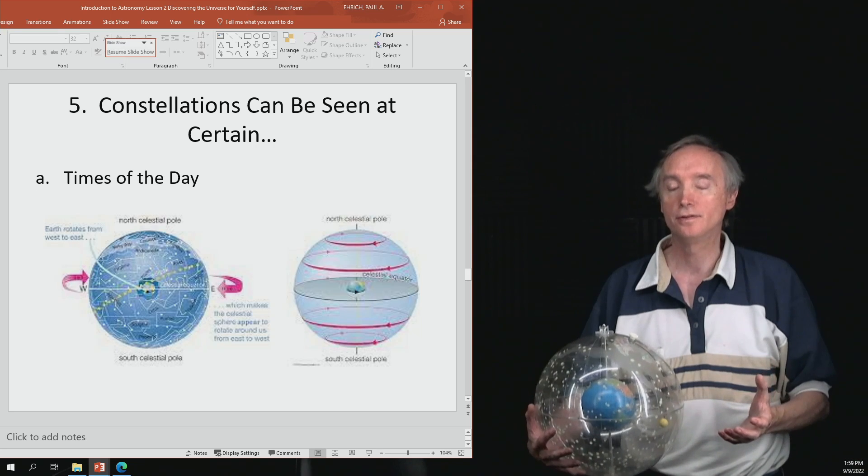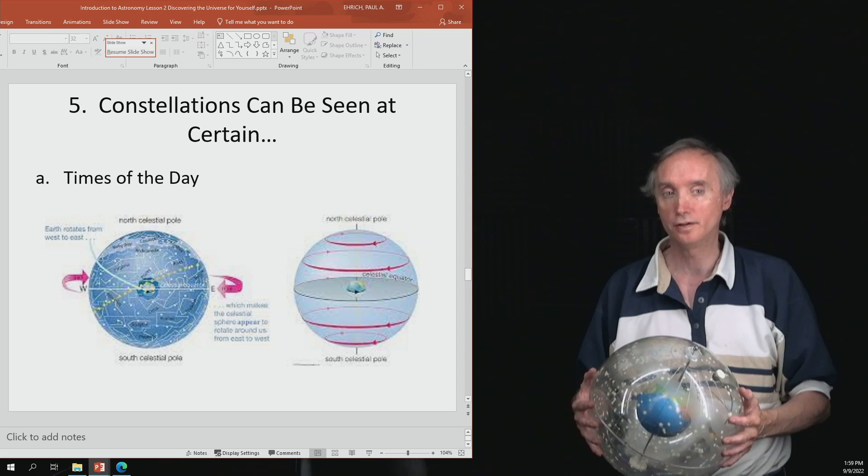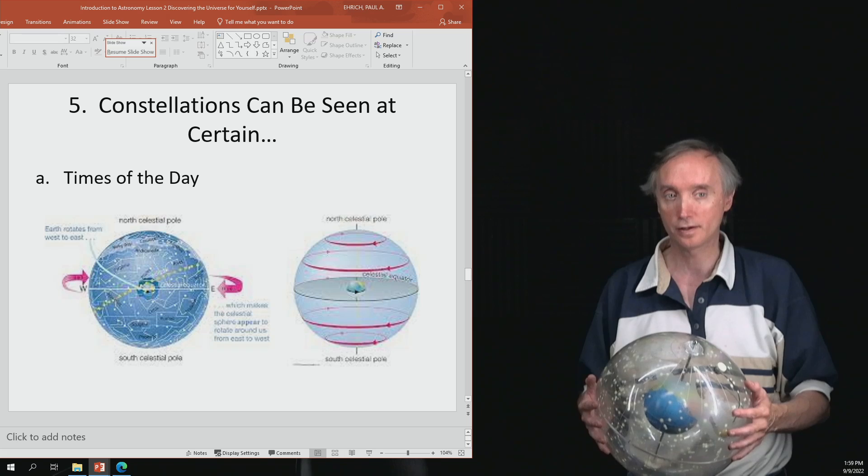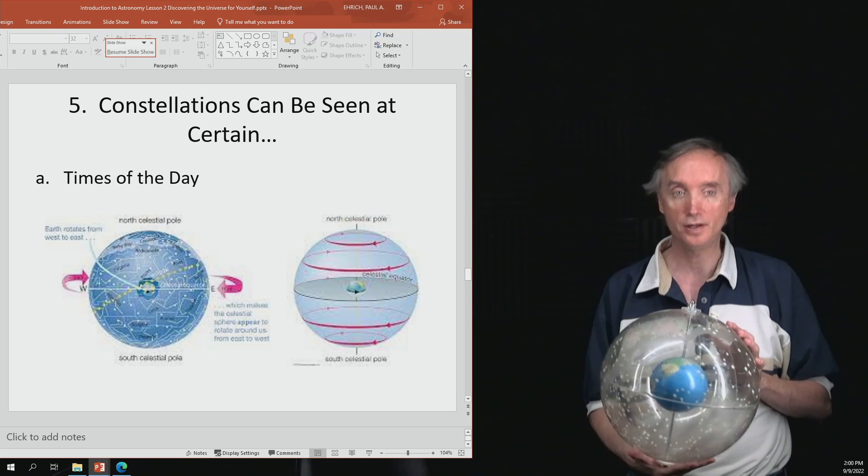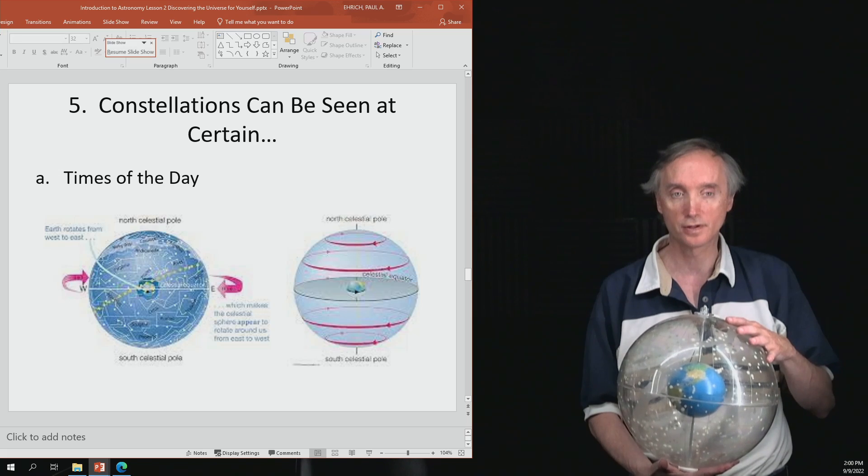So it's not that the sun and the moon and the constellations are really moving. It's because the Earth is rotating. You can do this with a globe pretty easily, but let's use the celestial sphere as our example.